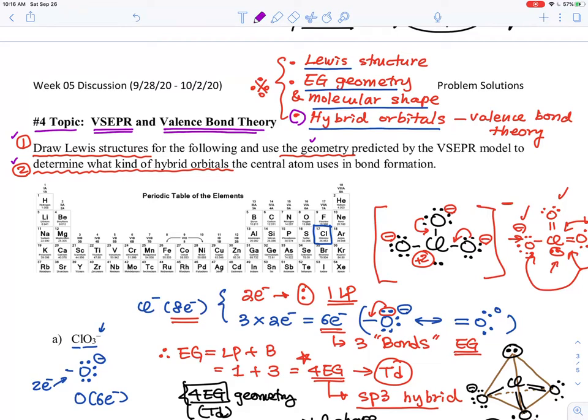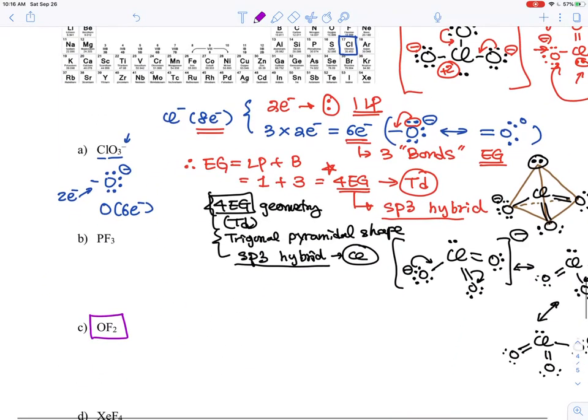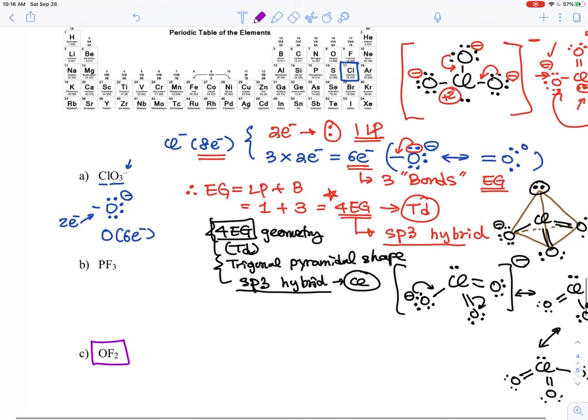When it comes to the molecule, you need to figure out the electron group geometries and the molecular shapes, and then what's the hybrid orbital in the center. So the third problem that we are talking about is OF2.